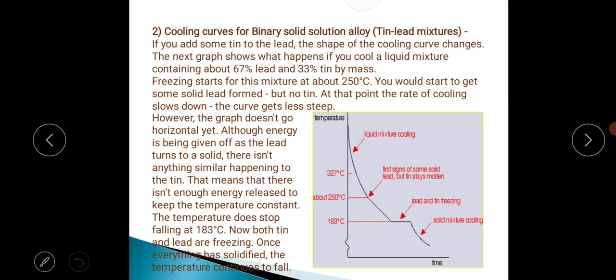Cooling for binary solid solution alloy, tin-lead mixture: If you add some tin to the lead, the shape of the cooling curve changes. The next graph shows what happens if you cool a liquid mixture containing about 67% lead and 33% tin by mass. Freezing starts for the mixture at about 250 degrees Celsius. You would start to get some solid lead form.